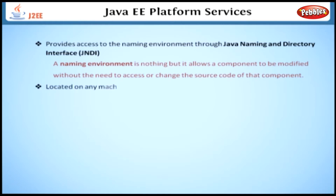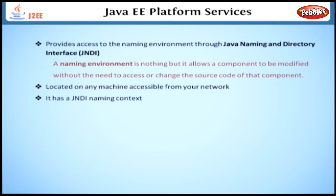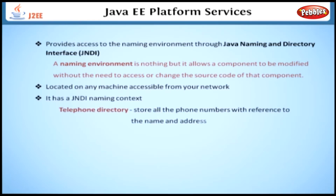Such components can be located on any machine accessible from your network, but not necessarily the local workstation. Once a component has been implemented in the environment, it has a JNDI naming context. A real-world example for the naming service is a telephone directory, where we can store all the phone numbers with reference to the name and address. If we want a phone number, we can find it using the name itself.